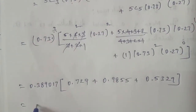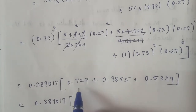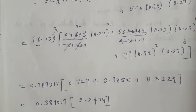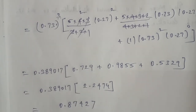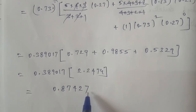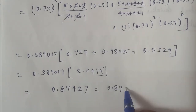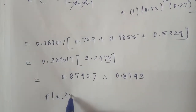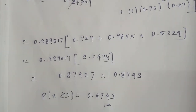Adding all three values together: the total is 0.389017 plus the remaining terms. So the total is 0.87427. The book answer is 0.8743. So the answer is 0.8743. Thank you, students.